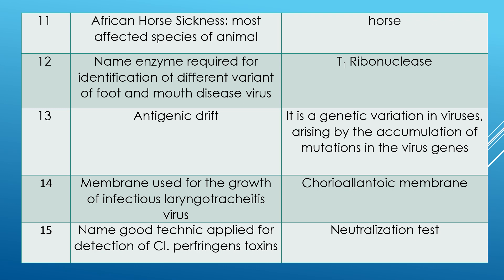Question 11: African horse sickness — which is the most commonly affected species of animal? There are horses, donkeys, mules and others. Out of all these, the disease name suggests African horse, meaning horse. Answer is horse. Question 12: name the enzyme required for identification of different variants of foot and mouth disease virus. The answer is enzyme T1 ribonuclease.